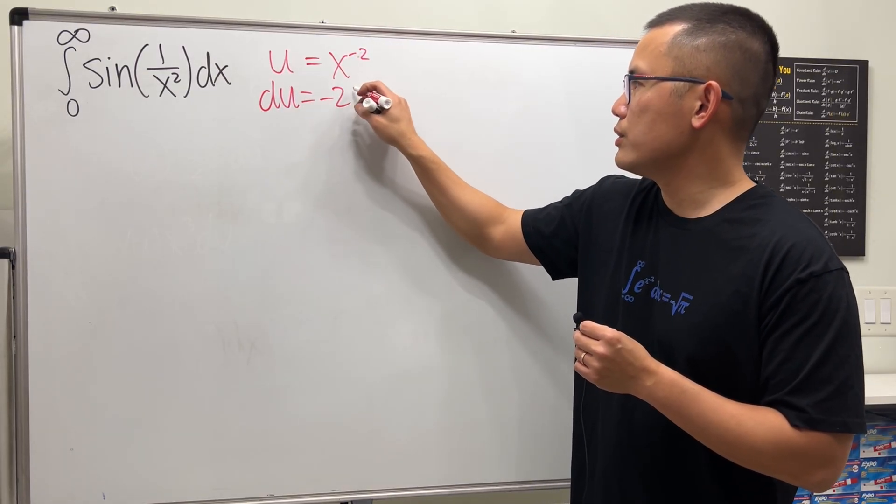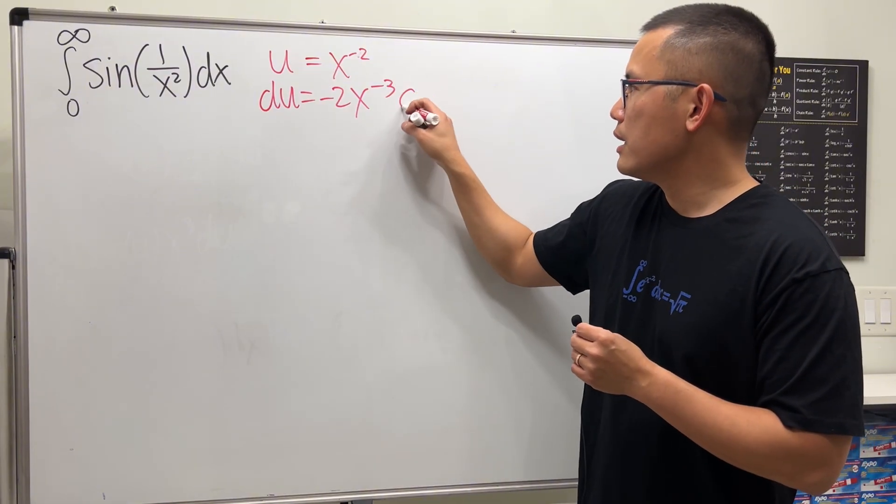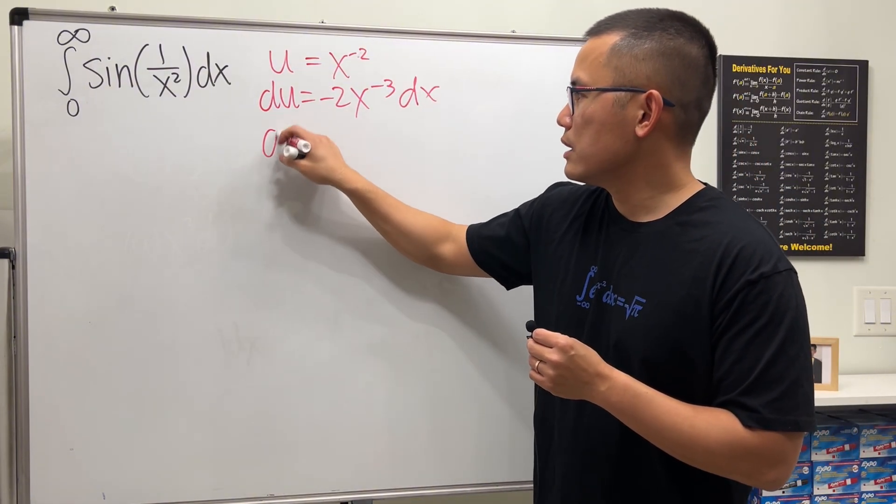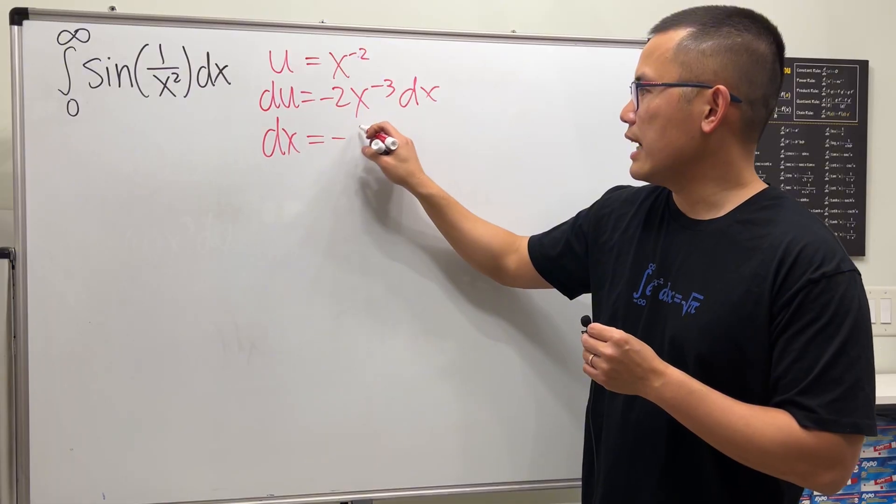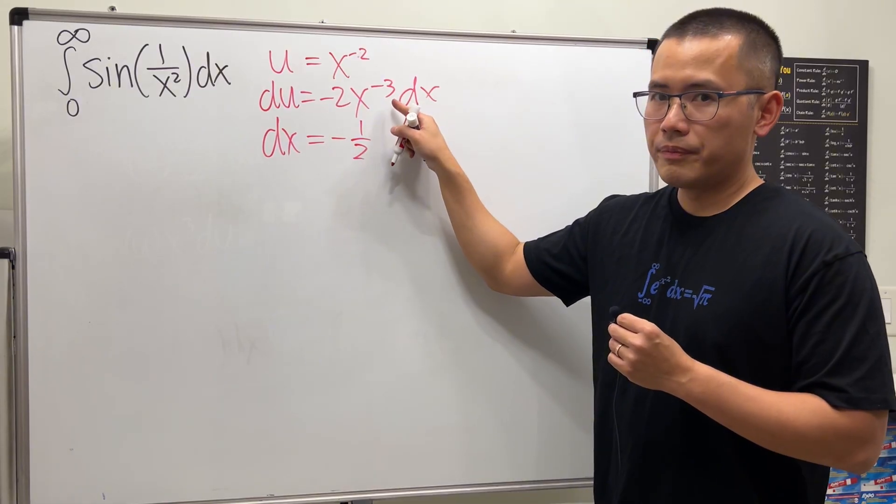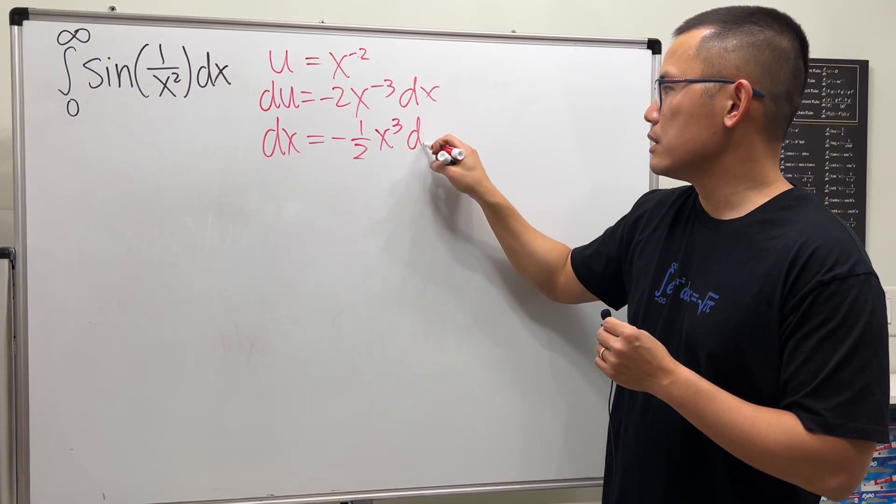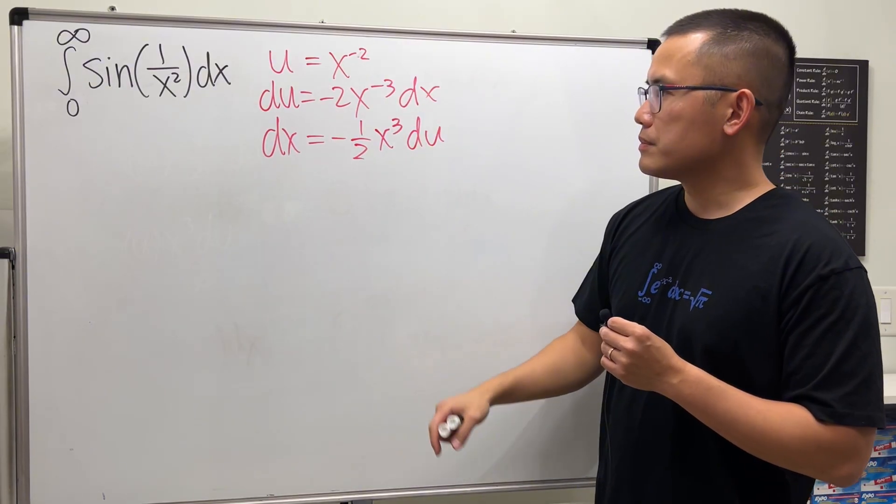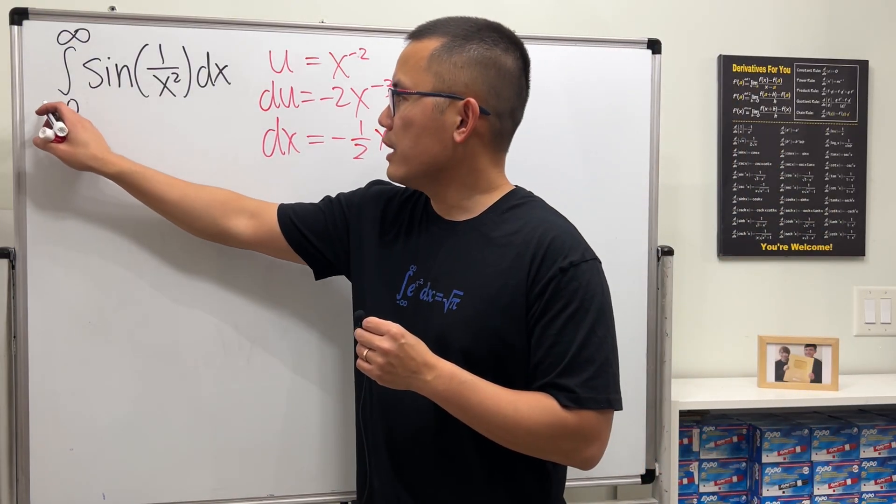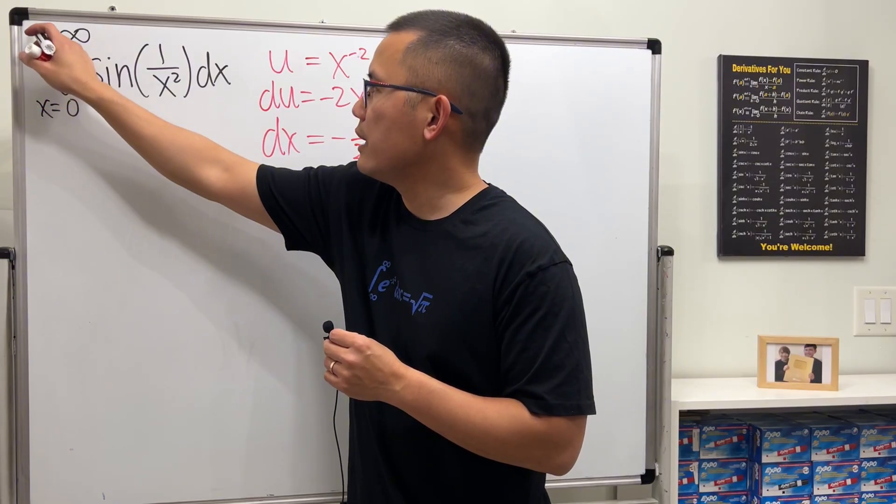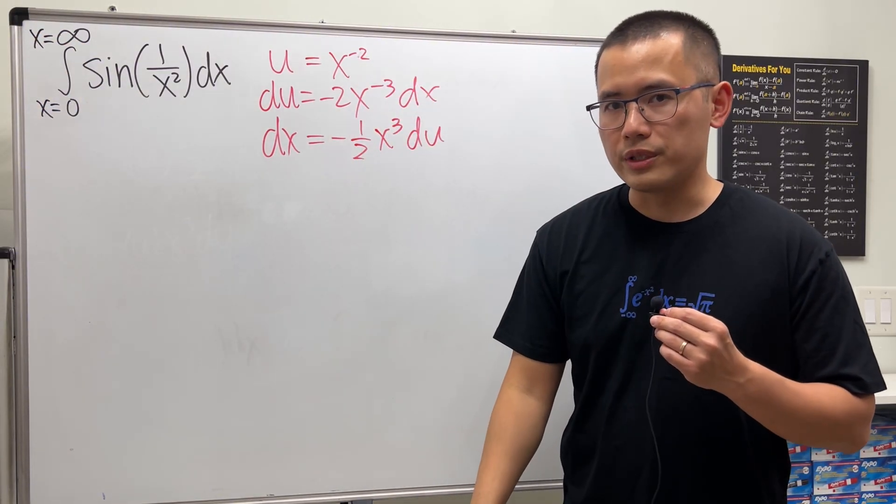du is negative 2 x to the negative 3. And then so for dx, I will have to divide this to the other side, multiply this to the other side. So technically it becomes x to the third power times du. Now, don't forget to take x equal to 0 and x equal to infinity and then change them into u accordingly.